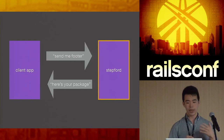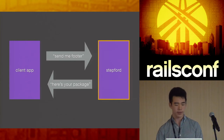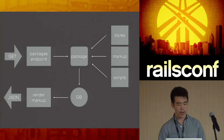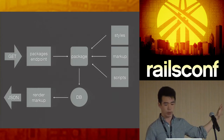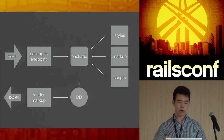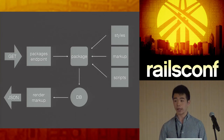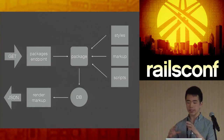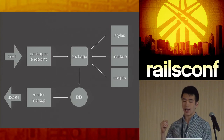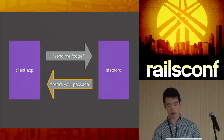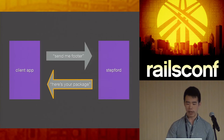Steppard receives the GET request at the packages endpoint and then builds the package: it grabs the markup, styles, and scripts; pre-compiles the styles and scripts; stores everything in the database; and renders the markup server-side. It takes the ERB template stored inside Steppard and renders it into raw HTML, then sends it back via JSON.